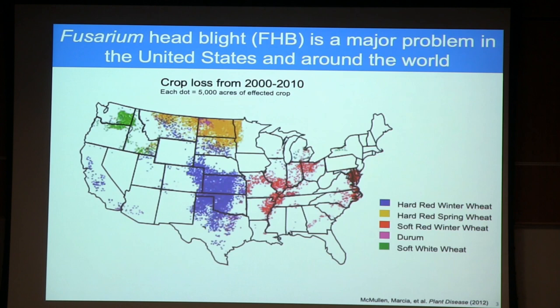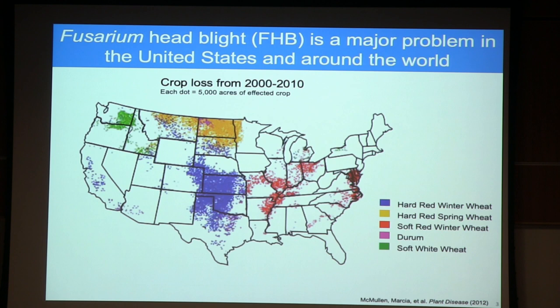Unfortunately, production of wheat and barley has been threatened for some time by the fungal infection Fusarium head blight. This map shows each dot representing 5,000 acres of wheat affected between 2000 and 2010. The different colors represent different cultivars affected. These incidents cause massive economic losses — in one two-year period, farmers in North America lost 2.7 billion dollars. It's also a problem in Europe, where every year farmers lose 10 to 40 percent of their crops.